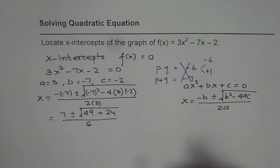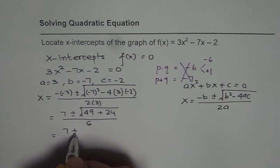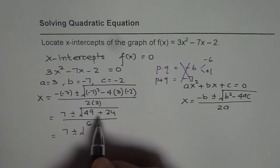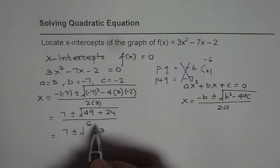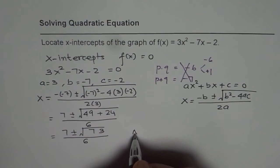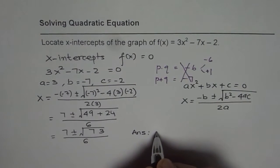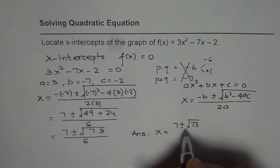This gives us a value of 7 plus or minus, let's add them up: 49 plus 24 is 73. So we get √73 over 6. So that is our answer. The answer is x equals (7 ± √73) / 6.